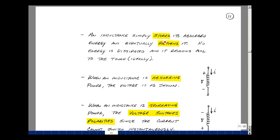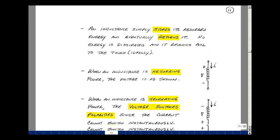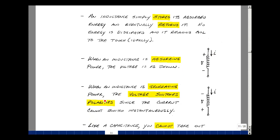Like a capacitance, an inductance simply stores its absorbed energy and eventually returns it. If no energy is dissipated, then the device remains cool to the touch, as compared to a resistance, which would turn its absorbed energy into heat. When an inductance is absorbing power, the voltages are shown. Current enters the plus terminal, comes out the minus terminal. When an inductance is generating power, because the current cannot change instantaneously, the polarity of the voltage flips, and now the current comes out of the plus terminal.